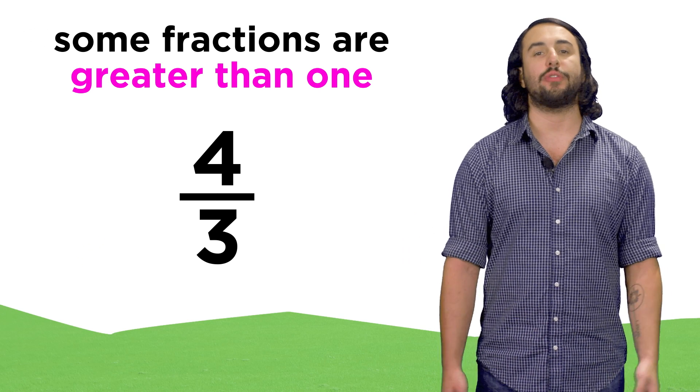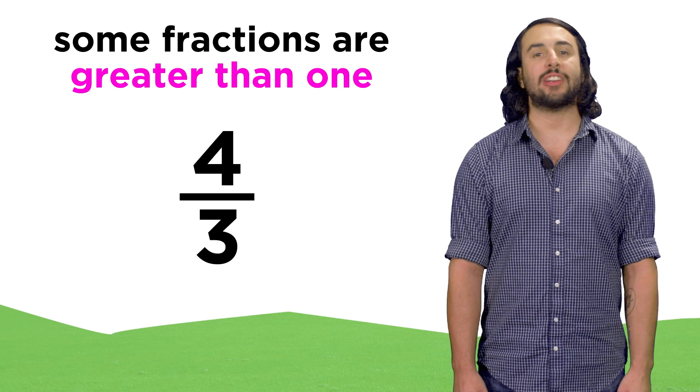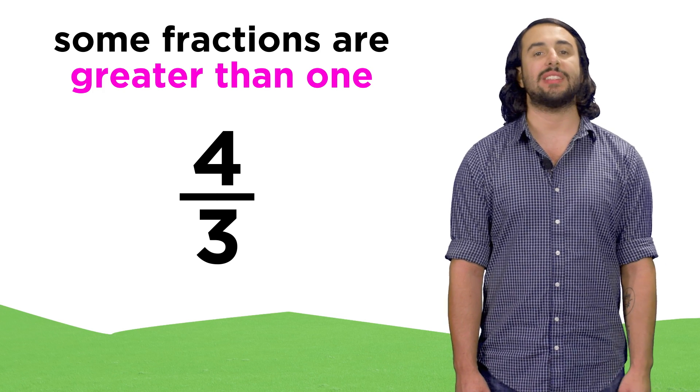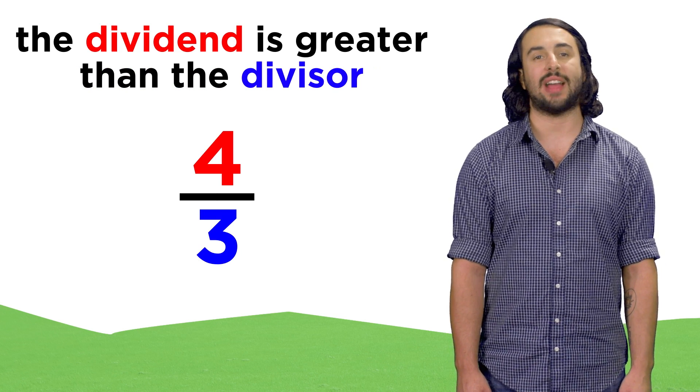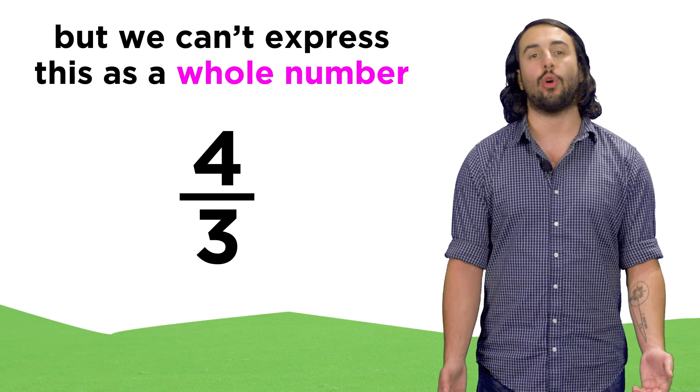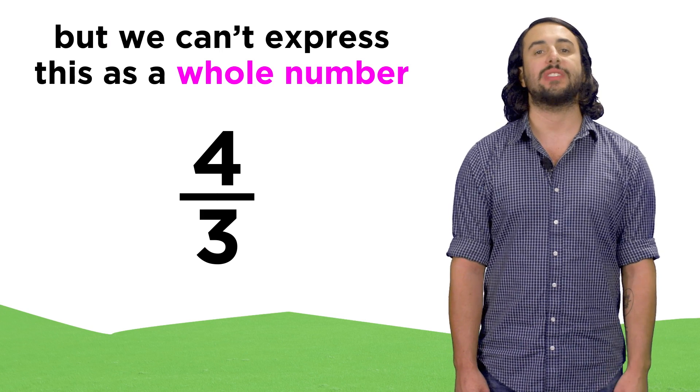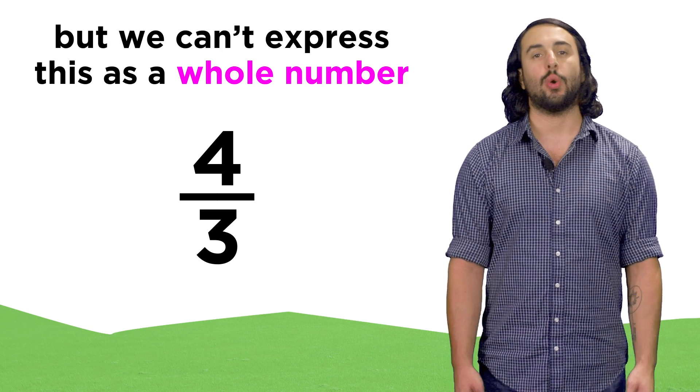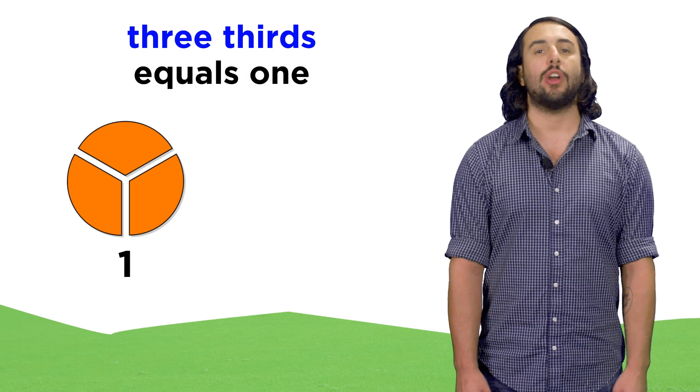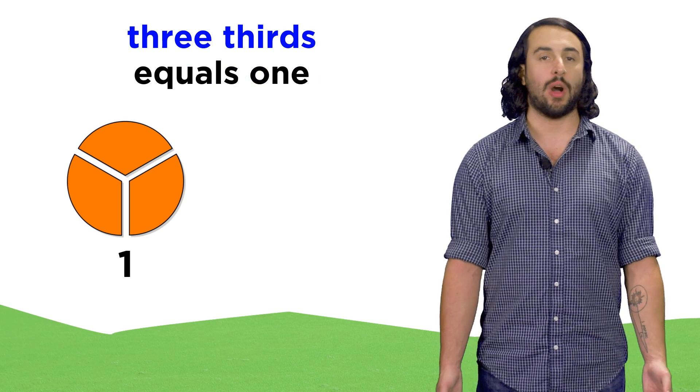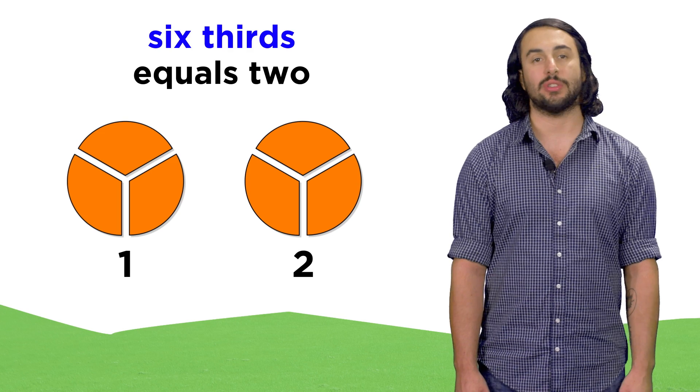Of course not all fractions are less than one. Fractions can also be greater than one. This will be the case if the dividend is greater than the divisor, but the quotient is not a whole number. Take for example four divided by three, or four thirds. We know that three thirds would equal one, and therefore six thirds would equal two.